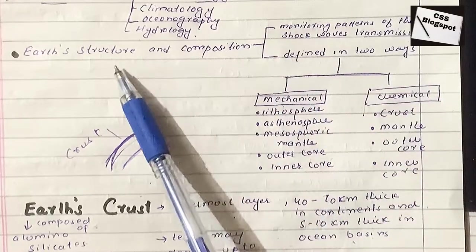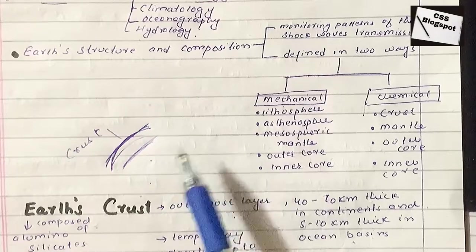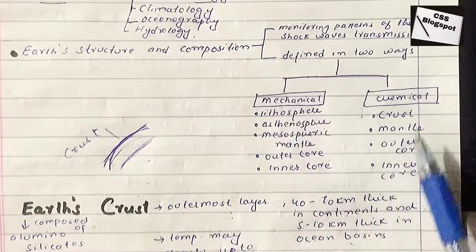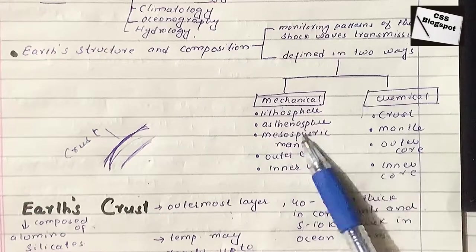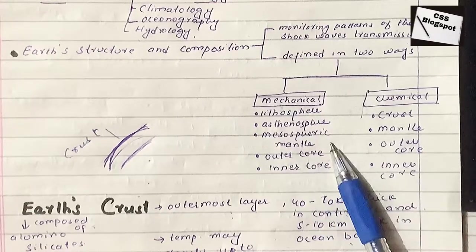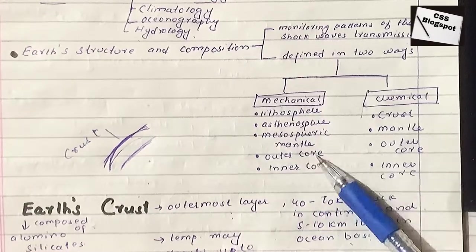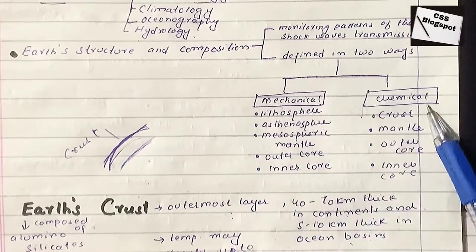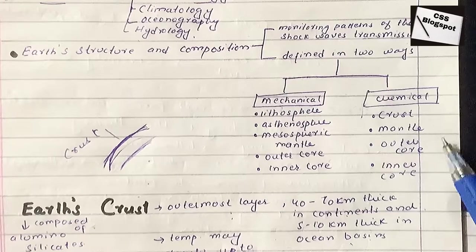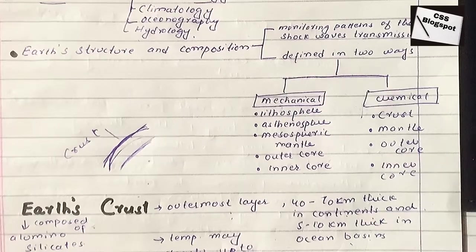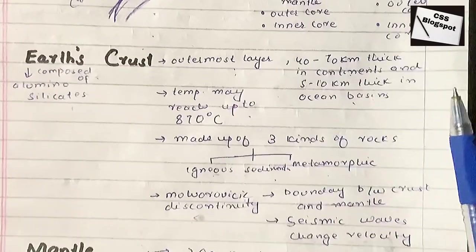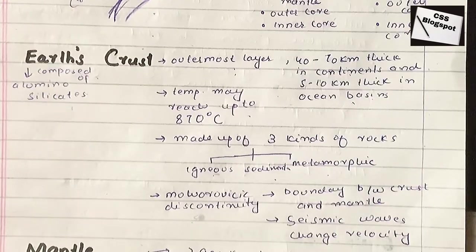Based on changes in earth's magnetism and gravitational attraction, scientists have defined earth's structure in two ways: mechanical and chemical. Mechanically: lithosphere, asthenosphere, mesosphere, mantle, outer core, inner core. Chemically: crust, mantle, outer core, inner core.